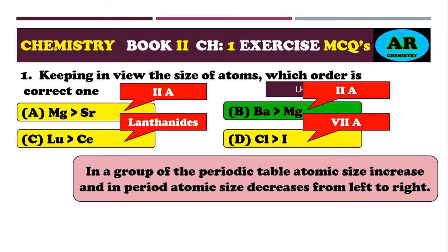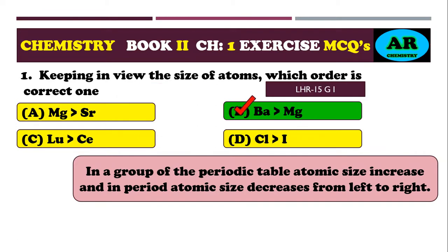The group 2A elements are beryllium, magnesium, calcium, strontium, barium, and radium. Barium is down the group and magnesium is at the top. Therefore, barium's size is greater compared to magnesium. The correct option is beta.